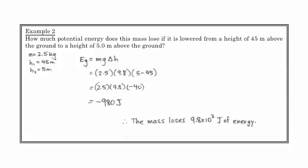And so we basically get this negative sign, negative 980 joules, for energy. And what that means, it doesn't imply direction as it sometimes did with vectors, but it implies that the mass is decreasing its height, so it's actually losing potential energy. And so here we'd say the mass loses 9.8 times 10 to the 2 joules of energy.